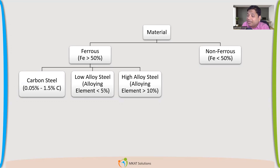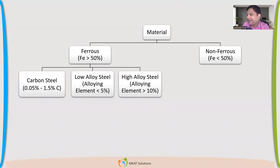For low alloy steel, the main alloying elements are chromium and molybdenum — we call them chromoly steels. You may have used materials like SA-387, P91, and P1. Sometimes vanadium is also added, like in modified P91. If the alloying percentage is less than 5%, we call it low alloy steel. We will further classify based on temperature as well.